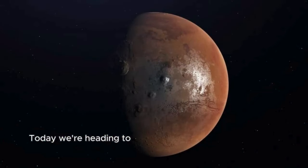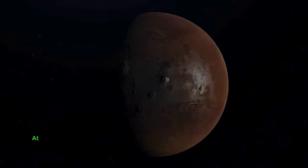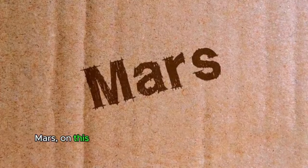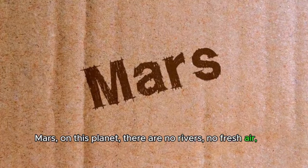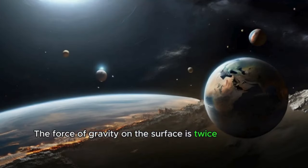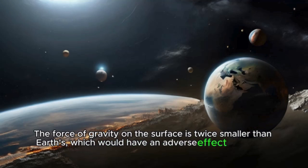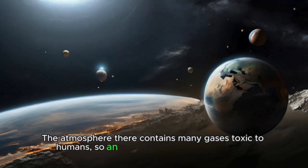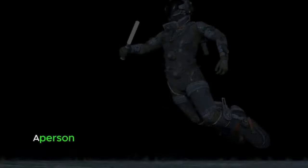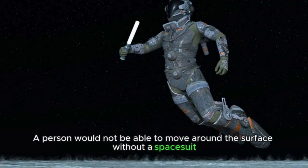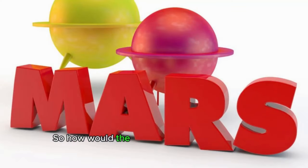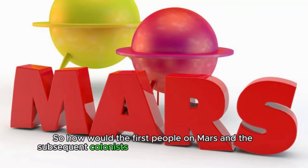Today, we're heading to a neighboring planet to find out if life on Mars is possible. At first glance, the red planet, located only seven months away from Earth, is completely unsuitable for habitation. Mars, on this planet, there are no rivers, no fresh air, no food. The force of gravity on the surface is twice smaller than Earth's, which would have an adverse effect on human health over time. The atmosphere there contains many gases toxic to humans, so an oxygen mask would be a must. A person would not be able to move around the surface without a spacesuit due to the low atmospheric pressure and constant solar radiation. So how would the first people on Mars and the subsequent colonists survive in such harsh conditions?